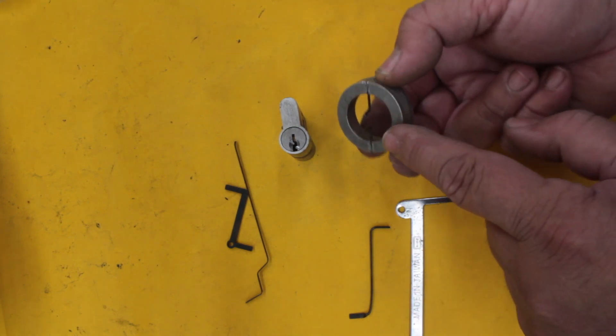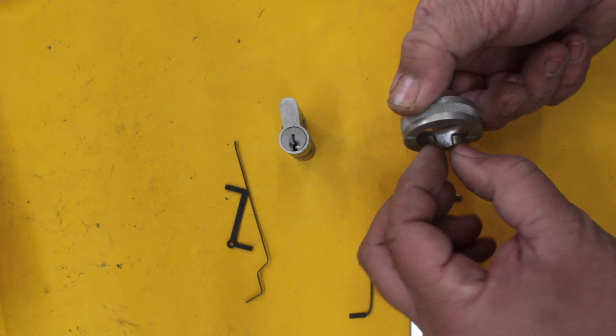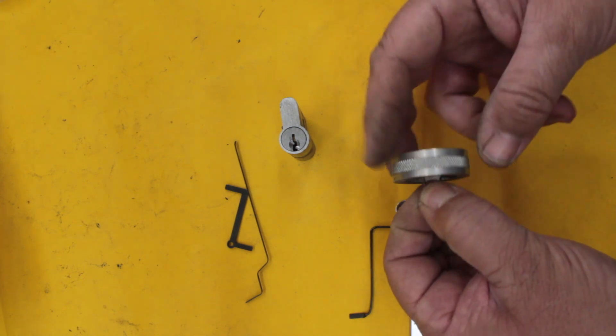The first thing about it is it has these little spikes on the back. That's what actually gets stuck into the lock, and then you apply tension by turning it left and right with this knurled outer edge.